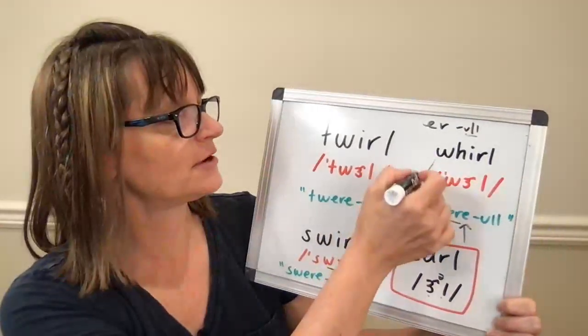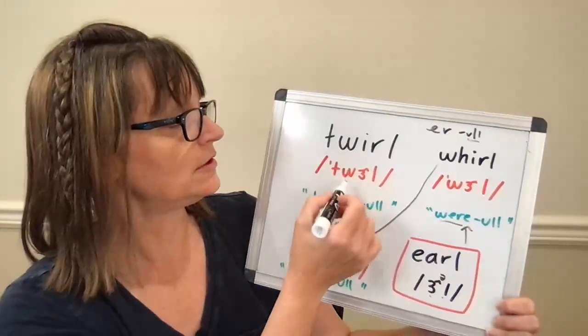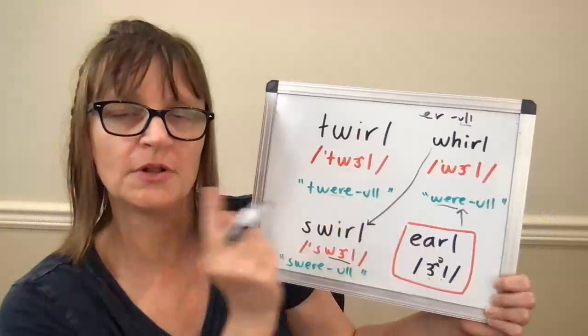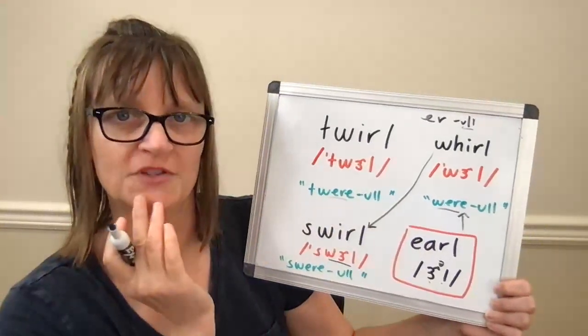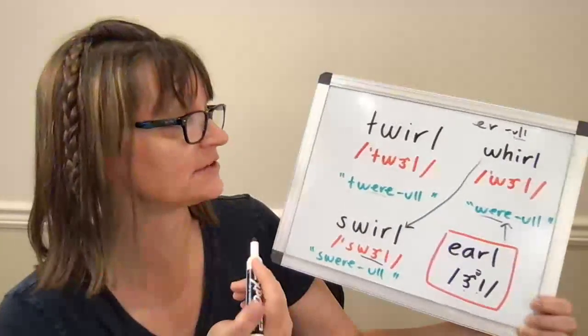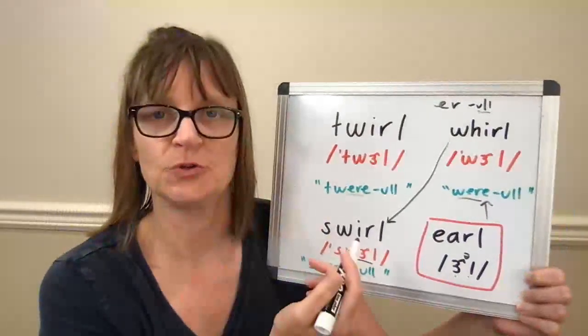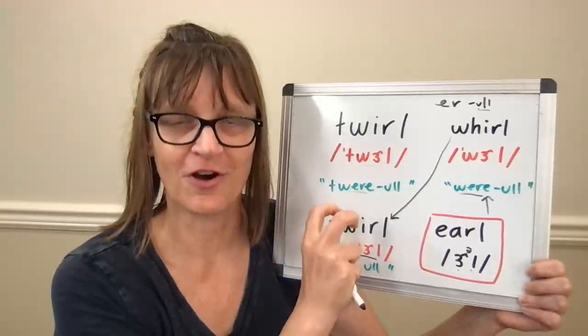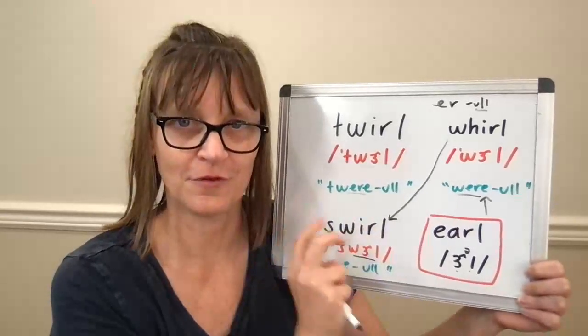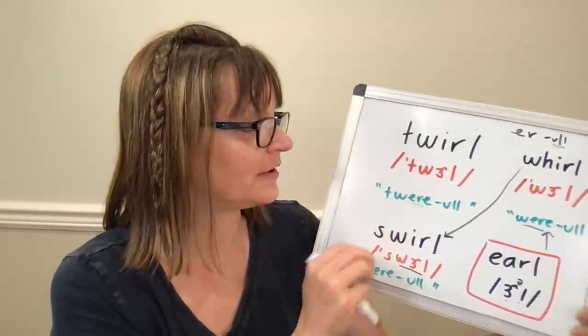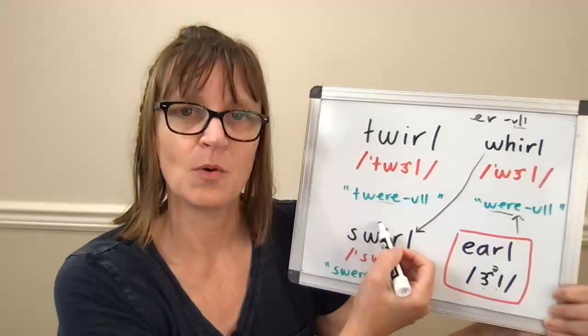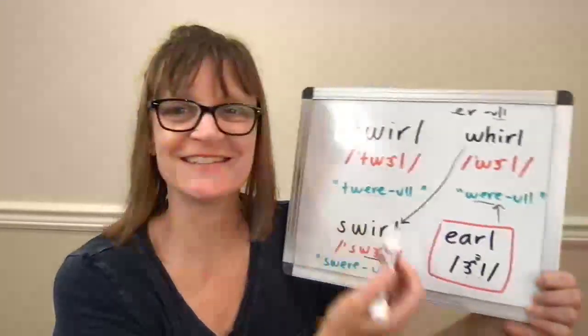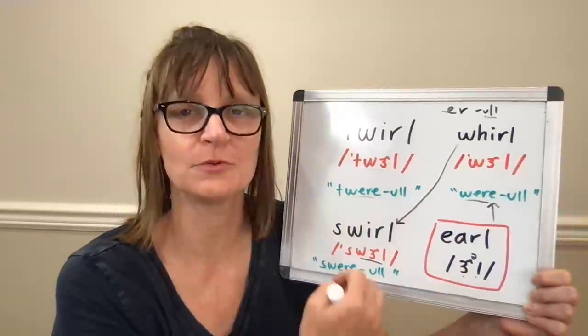And lastly, to our requested word, twirl, we're going to have the same thing. Building from whirl, twirl, add your T before your wuh sound, your aspirated t sound. So to say twirl, again, build it up from the R, from the L, from the W, from the T. Earl, whirl, twirl. Once I can say twirl, whirl, earl, swirl by themselves, I do want to try them in some short phrases.